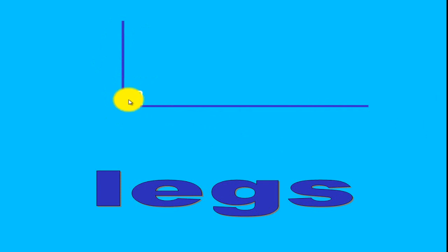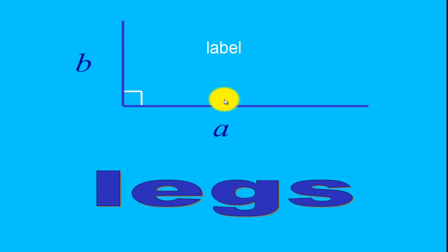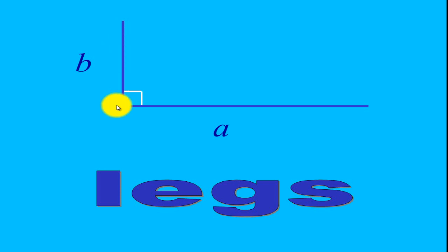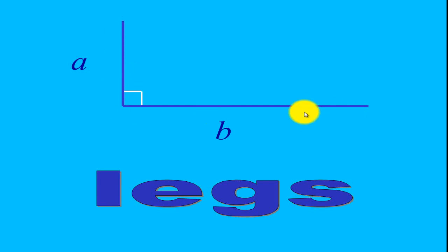So the sides containing the right angle will be your legs. We usually label legs as leg A and leg B. We can say this is your leg A and this is your leg B, or we can interchange the names — this can be your leg A and this can be your leg B.